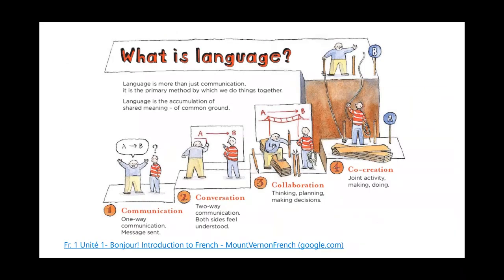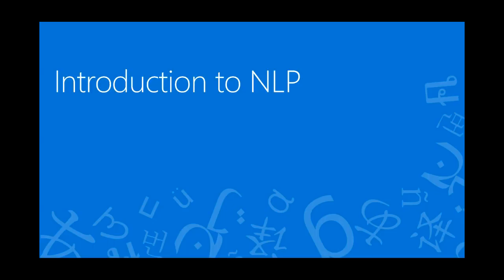Language enables us to communicate in a very meaningful manner. There is one-way communication where I can tell you something, and then there's two-way conversation where multiple people interact and both sides feel understood. This leads to collaboration — we can think, plan, and make decisions together. Engineers make bridges, scientists do research together, and this leads to co-creation and joint activity. Language in general is not a very simple topic. Now let's get into the buzz acronym NLP and demystify that.